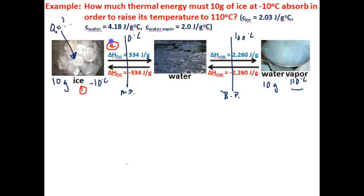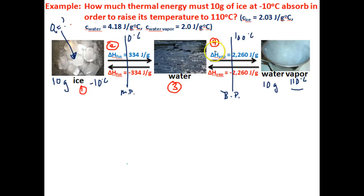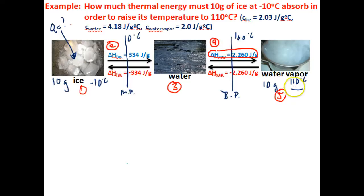In the second step, we will need to calculate the amount of energy it will take to melt 10 grams of ice — the heat of fusion. In the third step, we will need to figure out how much thermal energy this water must absorb in order to raise its temperature from zero degrees Celsius to 100 degrees Celsius. In the fourth step, we will need to calculate how much thermal energy this water will need to absorb to change it into water vapor — the heat of vaporization for 10 grams of water. In the fifth step, we will need to calculate how much thermal energy this 10 grams of water vapor will need to absorb in order to raise its temperature from 100 degrees Celsius to 110 degrees Celsius.